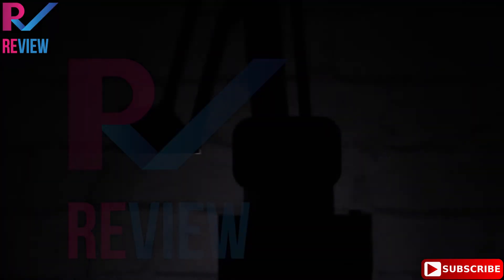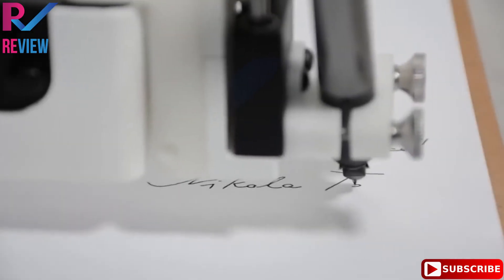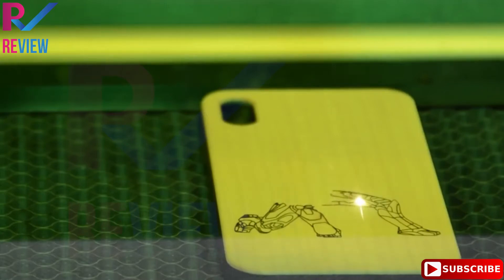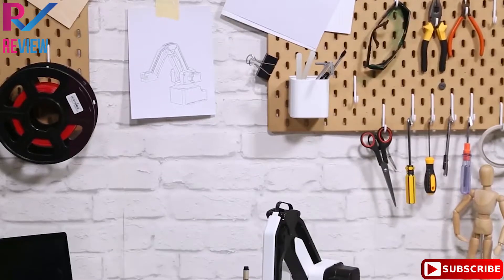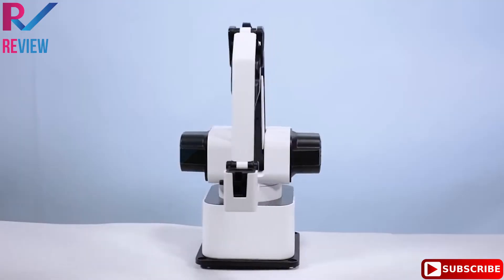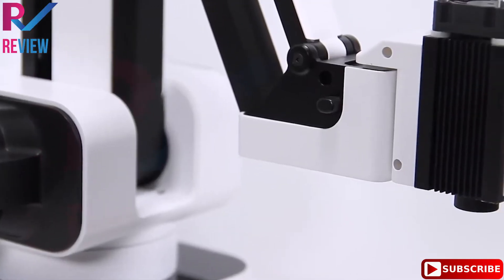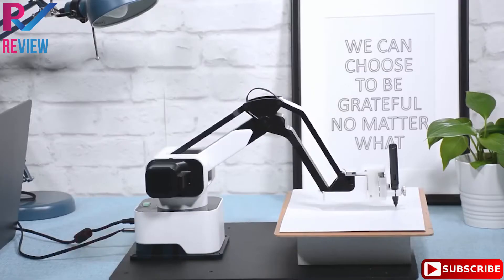Imagine having Iron Man's Jarvis on your desktop that writes your letters, draws your pictures, laser engraves your phone case, and plays chess with you. Today, it all becomes possible with HexBot, the first versatile all-in-one desktop robotic arm that turns your desktop into a workshop.